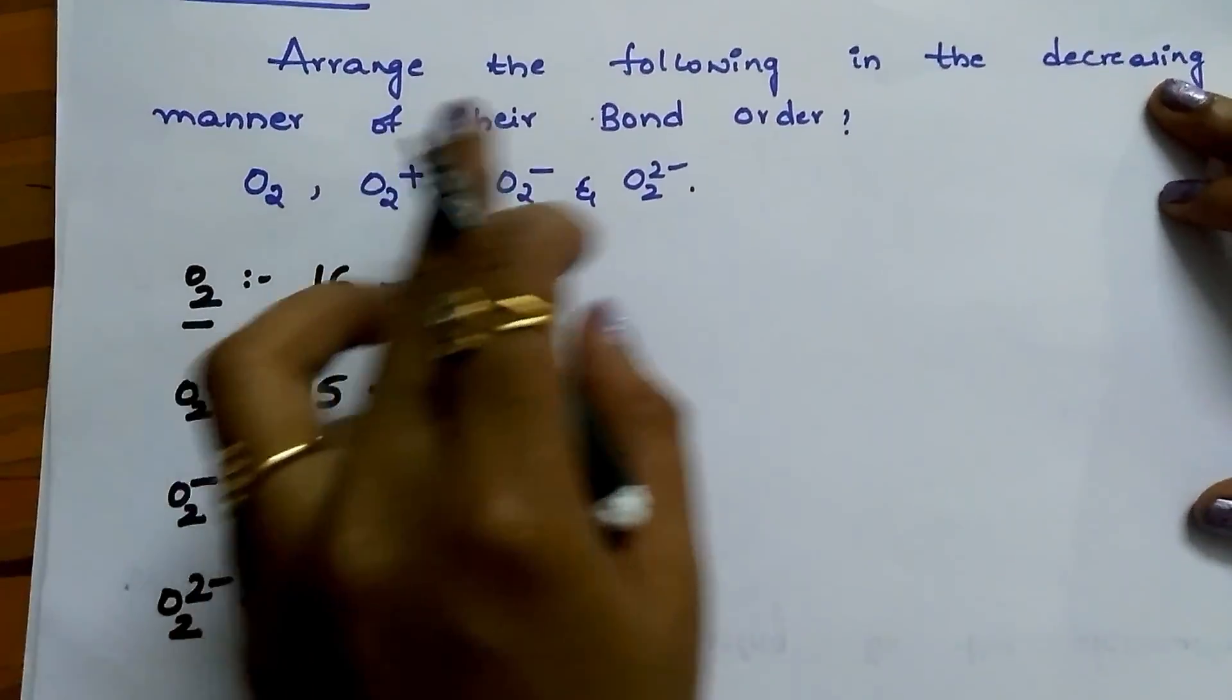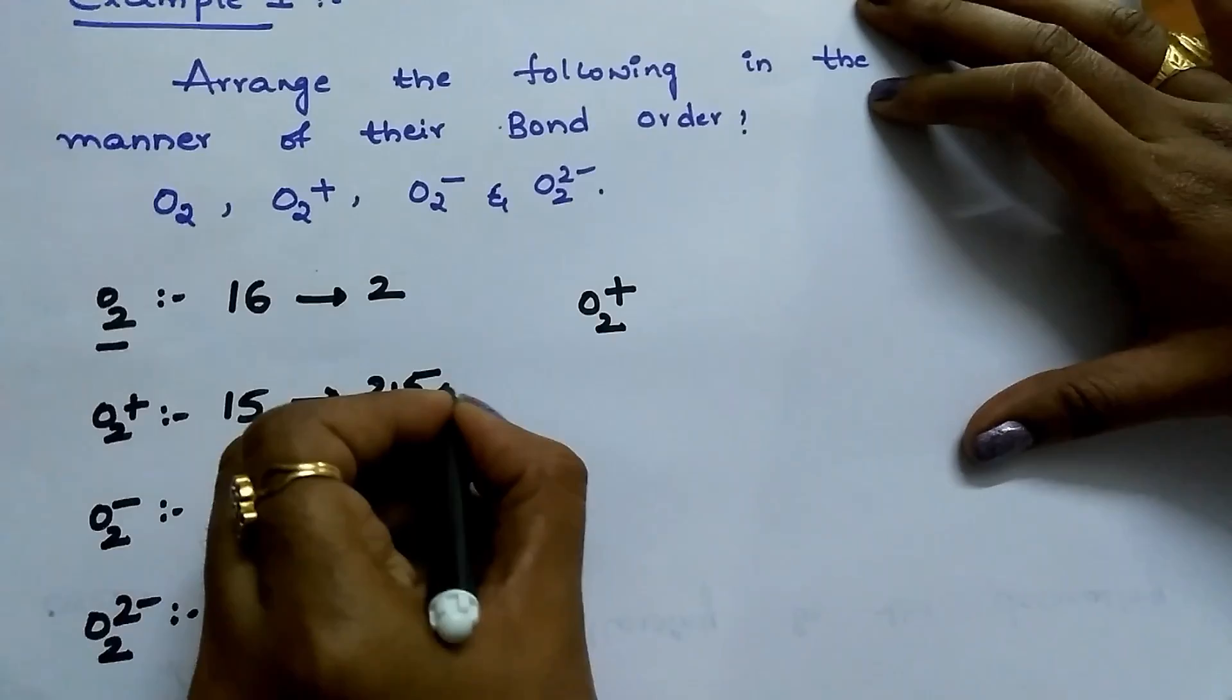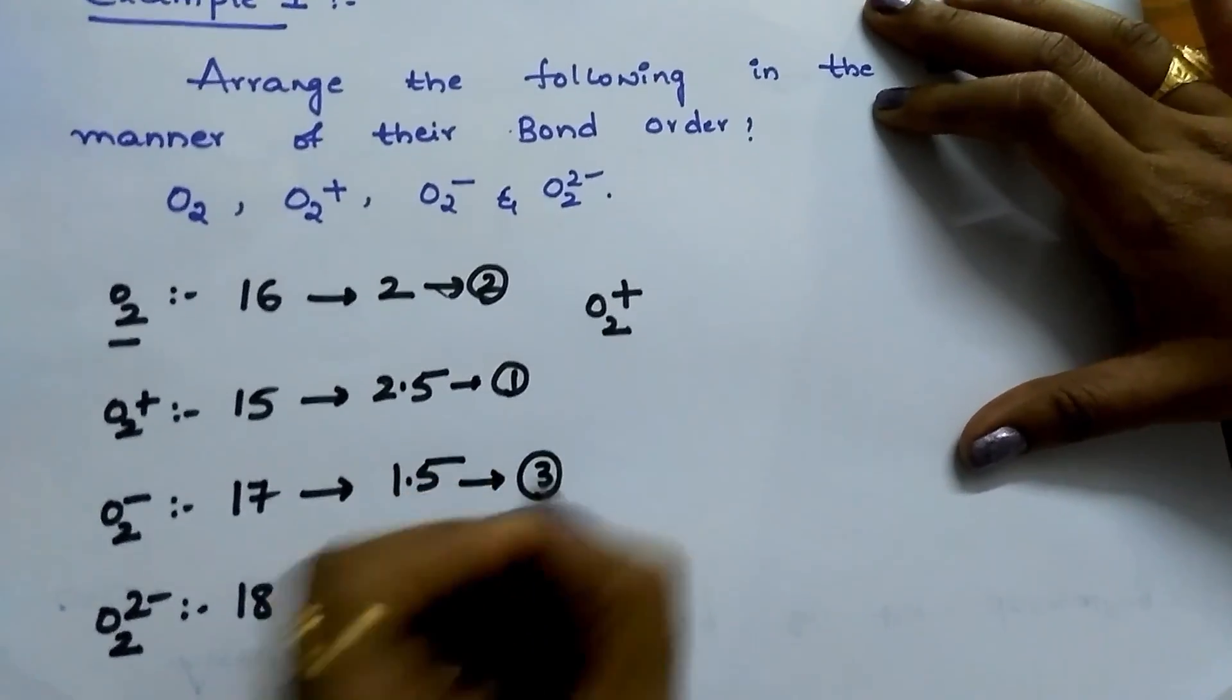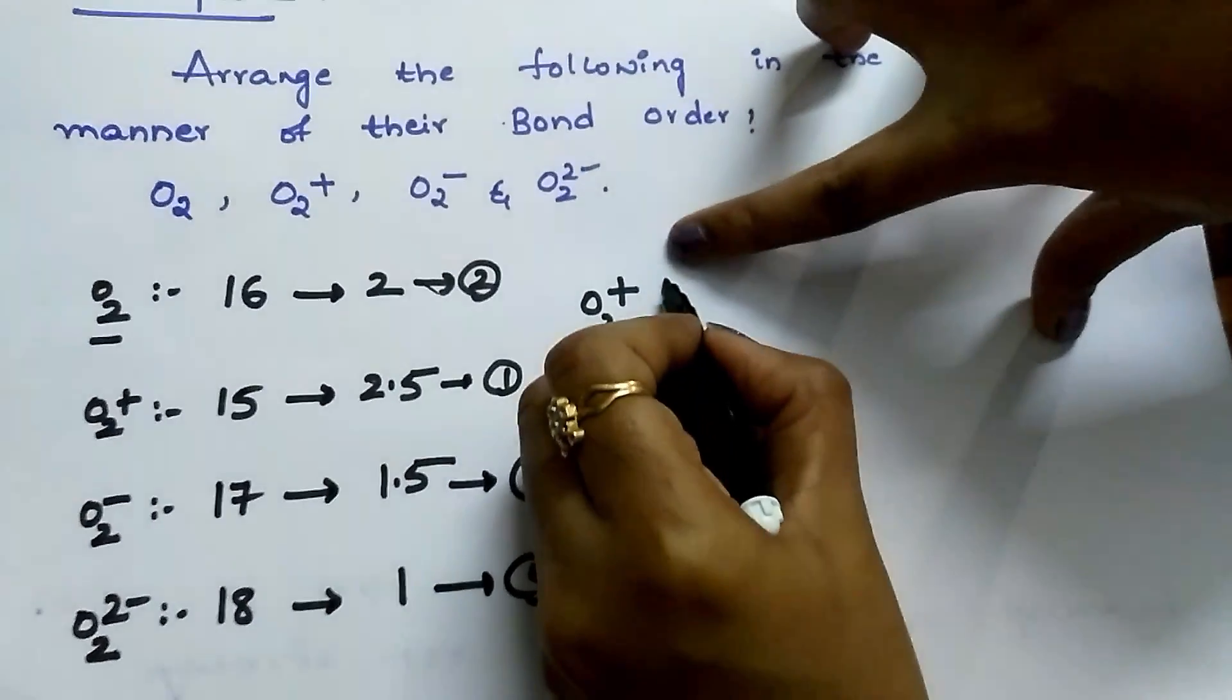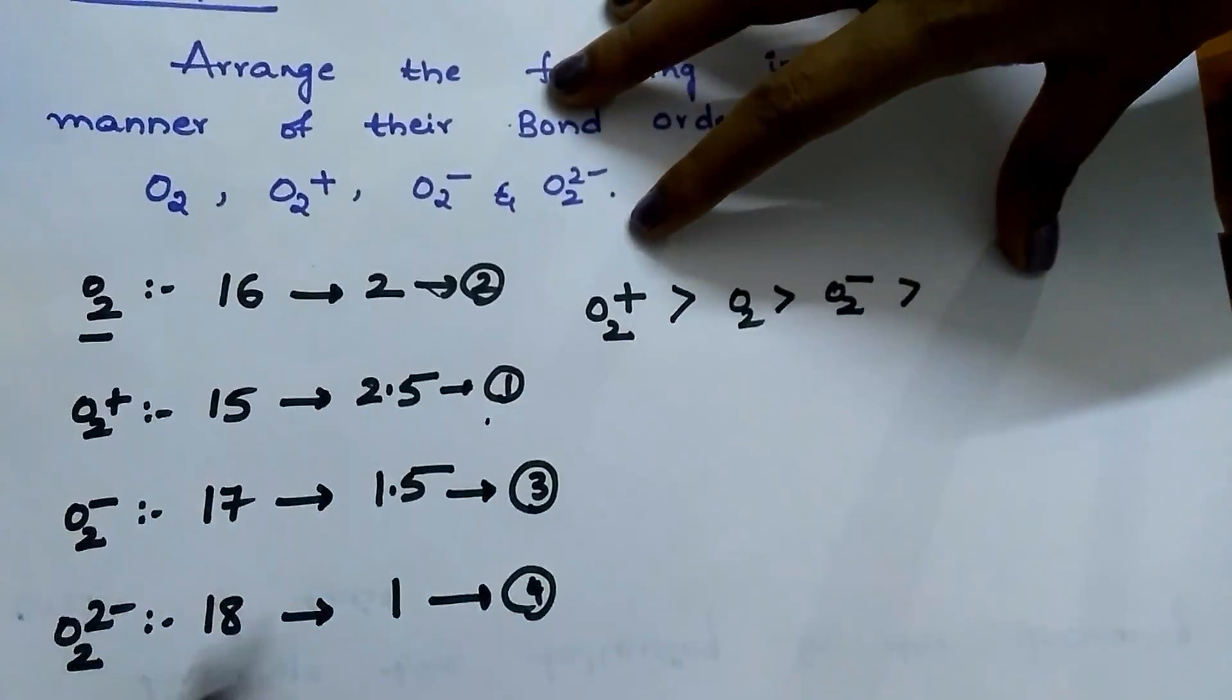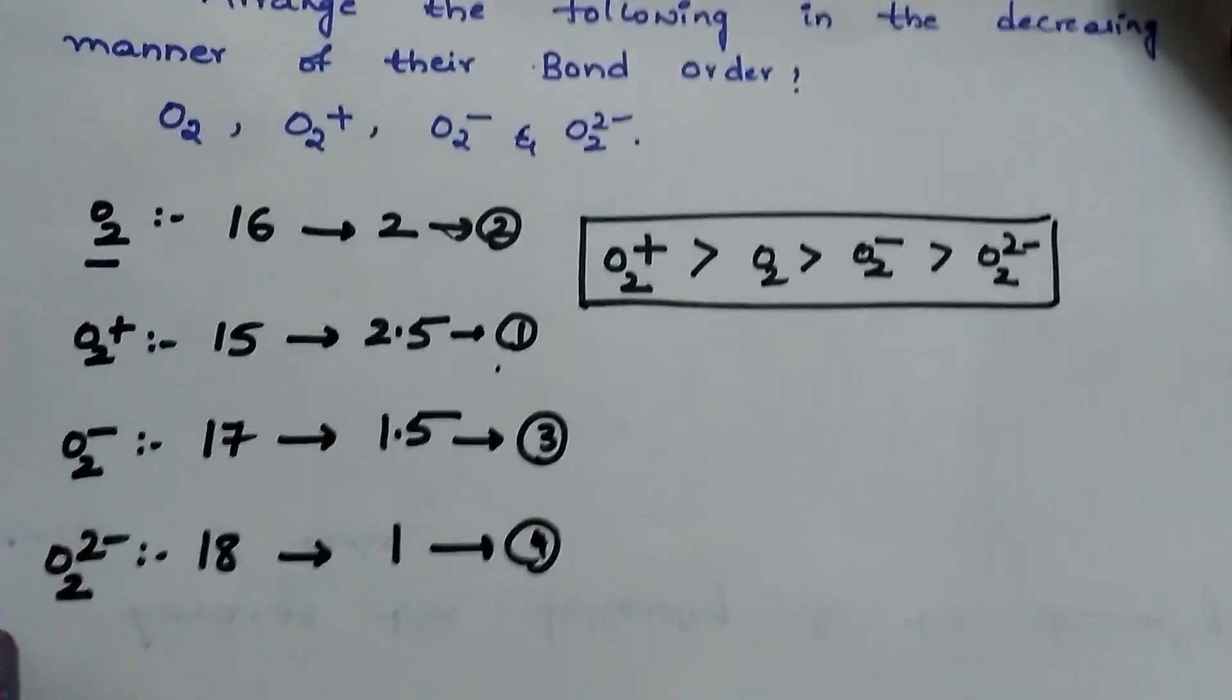They are asking decreasing manner, so write which has the most bond order first. O2+ with 2.5 is first, O2 with 2 is second, O2- with 1.5 is third, O2(2-) with 1 is fourth. So the answer is: O2+, then O2, then O2-, then O2(2-).